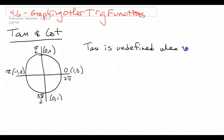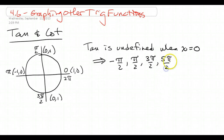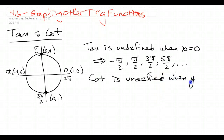Tangent is undefined when x equals 0. So basically, this is going to be at negative pi over 2, pi over 2, 3 pi over 2, 5 pi over 2 — basically any time we're at the top or the bottom of the circle. Now, the reciprocal of tangent is cotangent, so when we flip it and we have x over y, the cotangent is undefined when y equals 0.